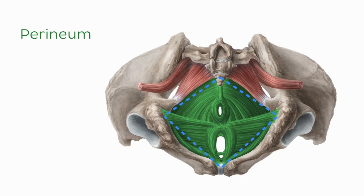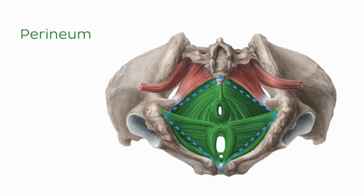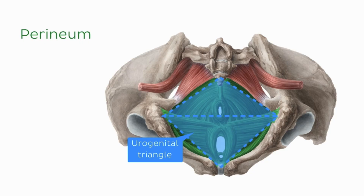The perineum is a diamond-shaped space, inferior to the levator ani between the thighs. The four points of this diamond are the coccyx posteriorly, the pubic symphysis anteriorly, and the two ischial tuberosities laterally. If we connect the dots along the ischiopubic rami and along the sacrotuberous ligaments, we have our diamond-shaped perineum. The perineum can then be divided into two triangles by drawing a line between the two ischial tuberosities, forming an anterior urogenital triangle containing structures related to the urinary and genital tracts, and a posterior anal triangle containing structures related to the intestinal tract.